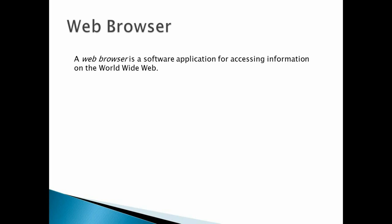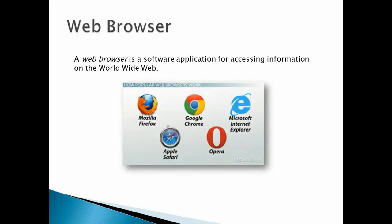A web browser is a software application for accessing information on the World Wide Web. To access the internet you need a web browser. There are different types of web browsers: Mozilla Firefox, Google Chrome, Microsoft Internet Explorer, Apple Safari, and Opera.